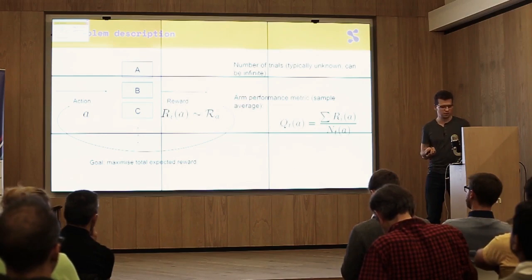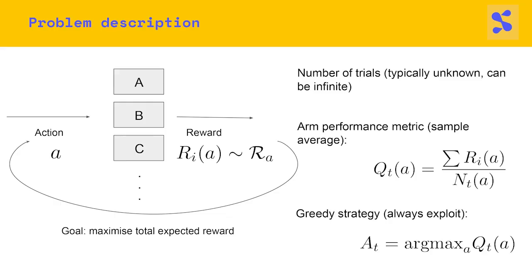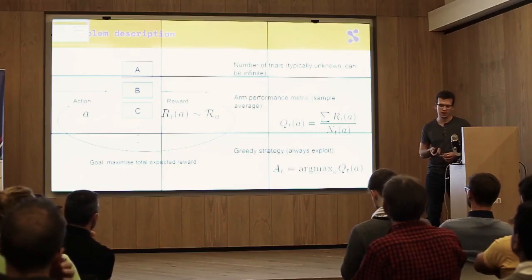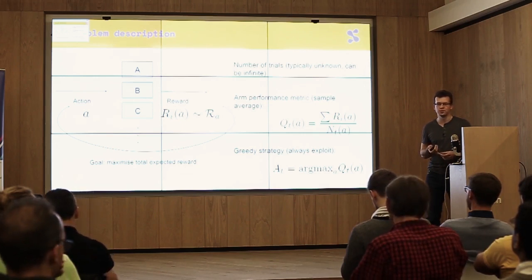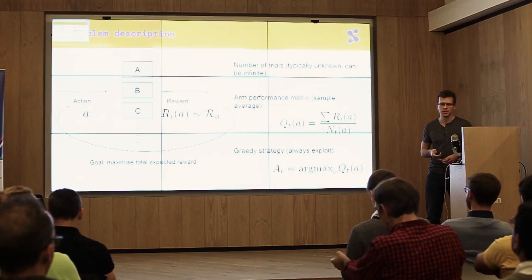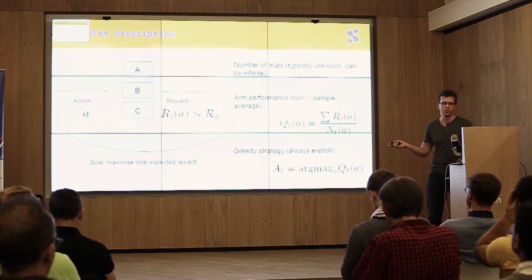The simplest thing you can do is always pick the choice that currently has the biggest reward, biggest sample average. Now you can probably see that this might not be ideal, because the rewards come from a distribution which is stochastic. So you might get lucky and get a big reward from a distribution that actually has a low expected value. But if you get lucky on the first one, you always stick with the choice that's suboptimal.